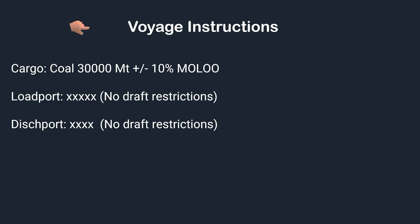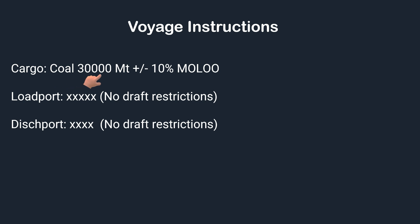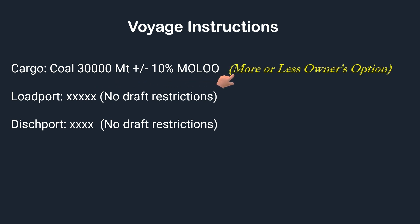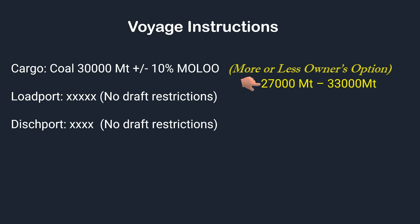According to the voyage instructions, we'll prepare the stowage plan based on the following data. The cargo to be loaded is coal, with a quantity of 30,000 metric tons plus or minus 10% MOLOO. It stands for 'more or less owner's option,' which means the charterer gives the owner, or the captain as the owner's representative, the flexibility to load between 27,000 and 33,000 metric tons as acceptable cargo limits considering the safety of the ship.